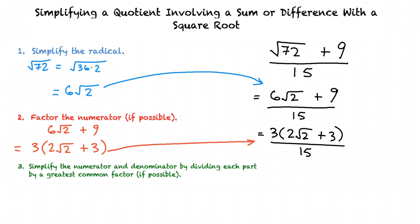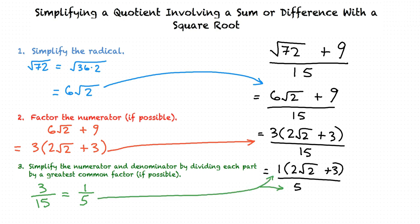Now to follow Step 3. The 3 that we pulled out and the 15 in the denominator share a greatest common factor of 3, so we can divide each part by 3. When we divide the numerator by 3 and the denominator by 3, we get one-fifth. So the final fraction is 1 times the quantity 2 square root of 2 plus 3, all divided by 5.